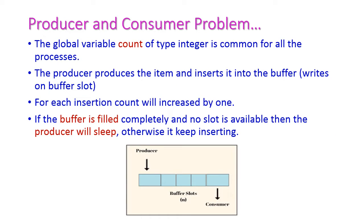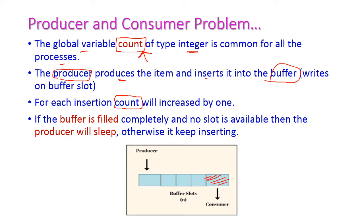In the producer-consumer problem, the count variable is a global integer variable common to all processes — at any time only one process can change its value. The producer produces an item and inserts it into the buffer. Once it writes something to a buffer slot, the count variable gets incremented.